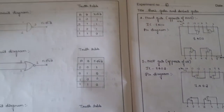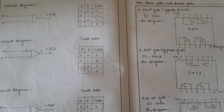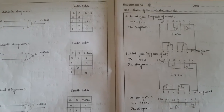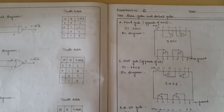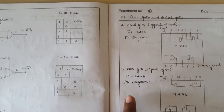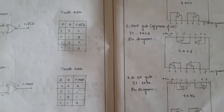Hello all. In this particular video we will be constructing the circuit for three gates — the derived gates called NAND gate, NOR gate, and XOR gate.